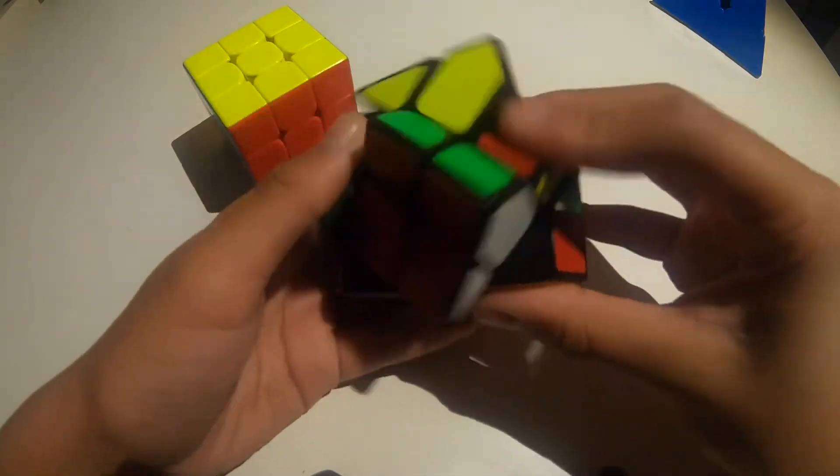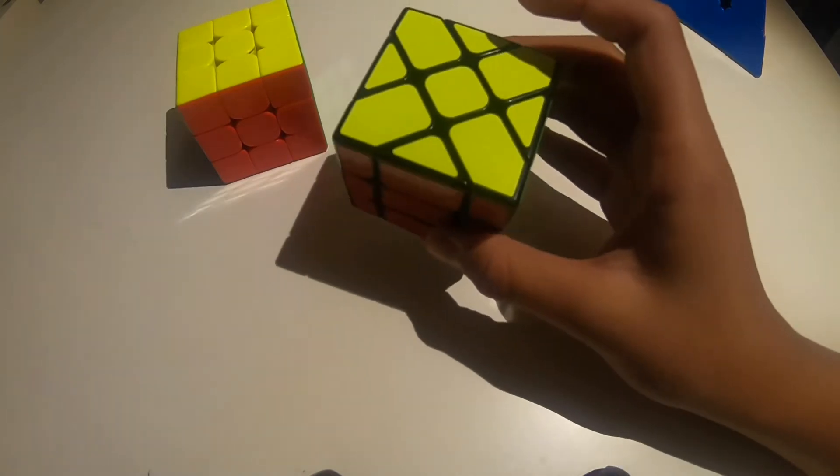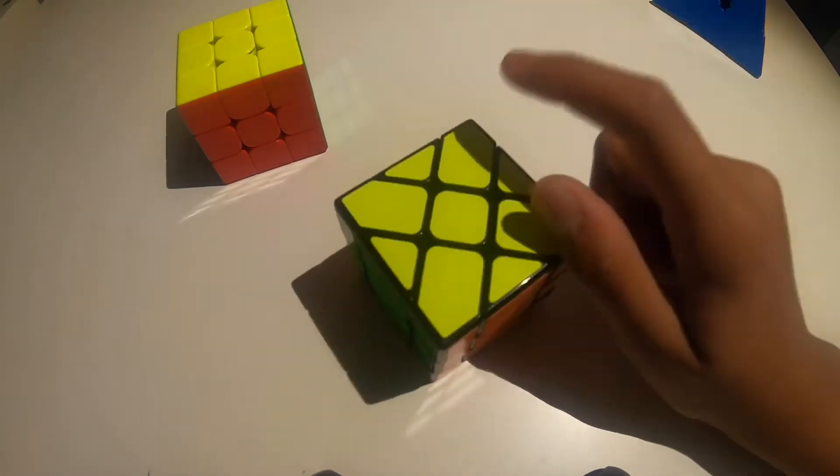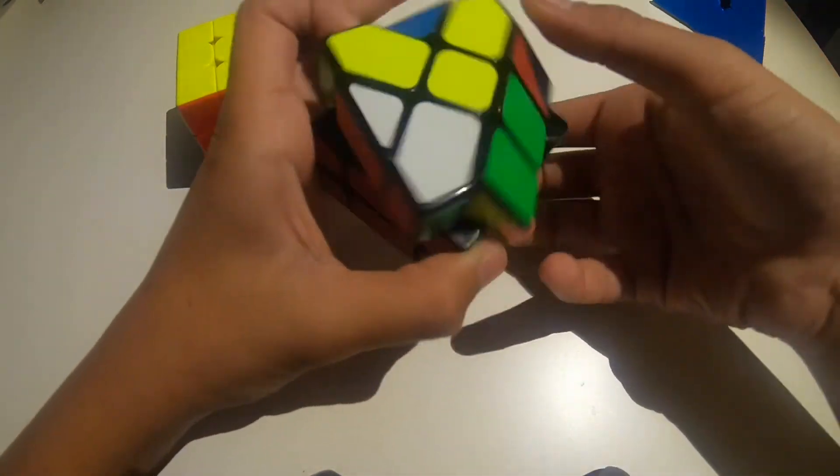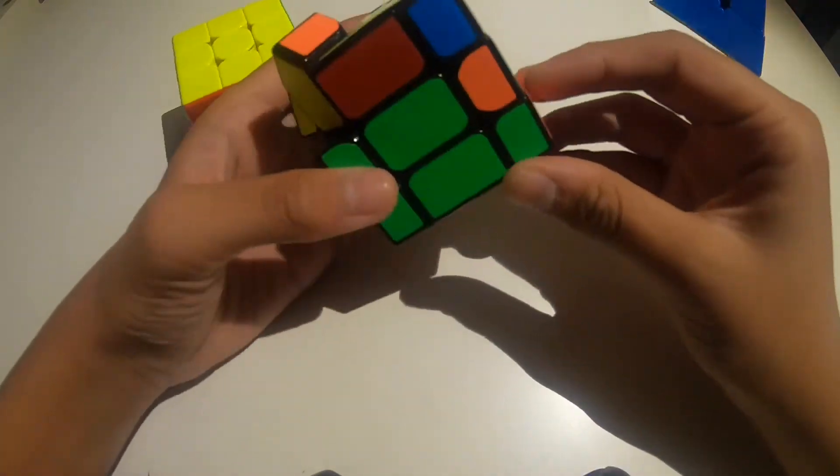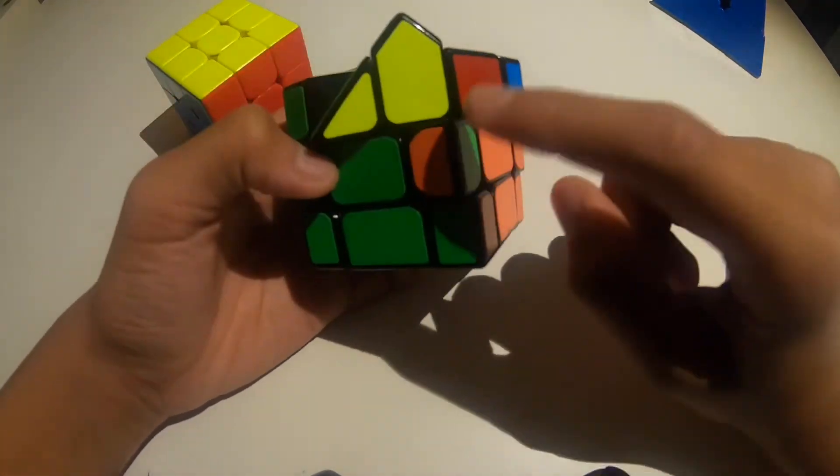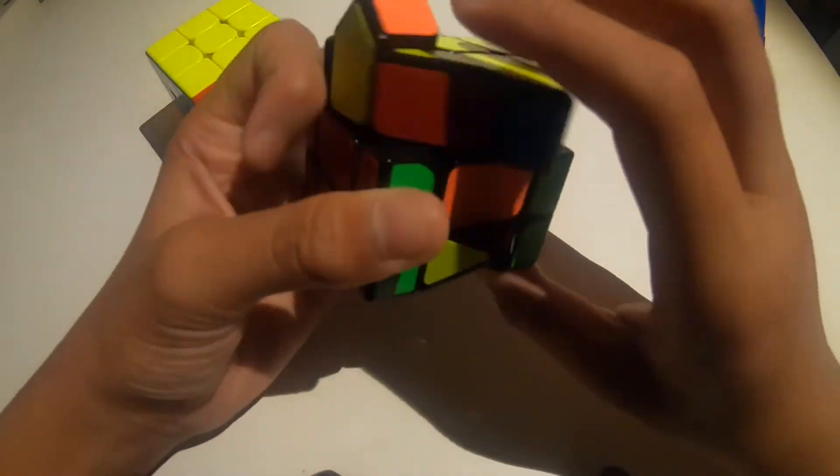So the reason why it's hard is, even though it's just a 3x3, the pieces look different. So it can kind of be hard to grasp your head around this. And sometimes you can get a parity, which looks something like this, where an edge is flipped. And you can get something like this, where a center is twisted. So you have to think of something for that.